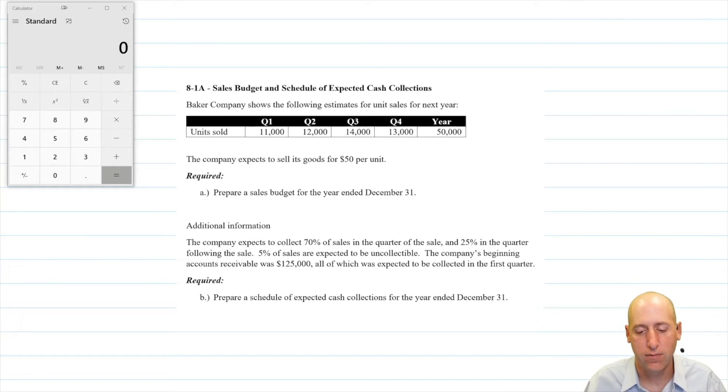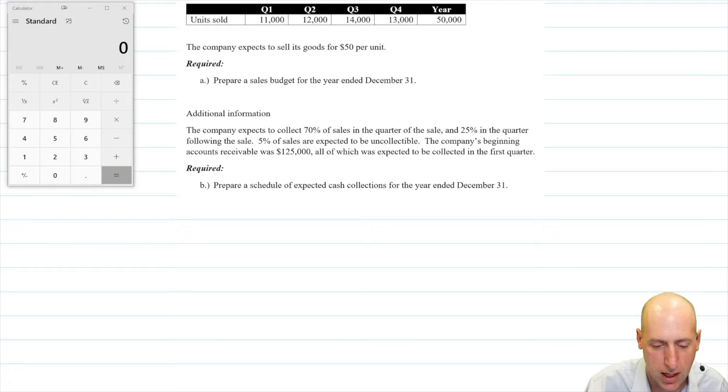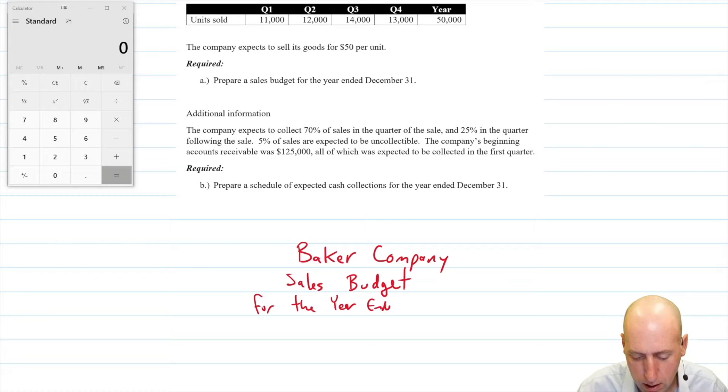So the company expects to sell goods at $50 per unit, prepare a sales budget. So all we're saying is convert these unit sales into dollar sales. That's a fairly straightforward ask. Let's do it. All budgets are proper documents that are going to take a three line title, the name of our company, Baker company, the name of our budget. This is a sales budget and for the period ended. So we have a few in this course that are for the quarter or for even the month. This one is for the year though, for the year ended. And it tells us the end of the fourth quarter is December 31st.